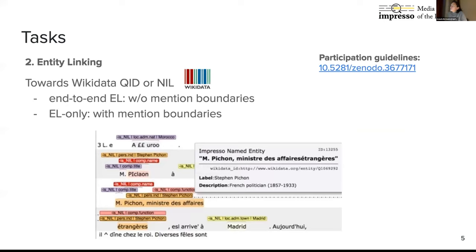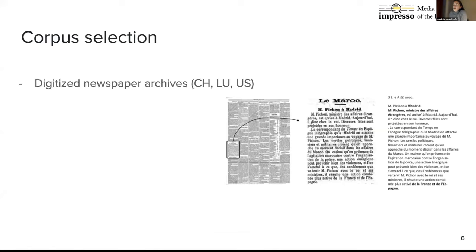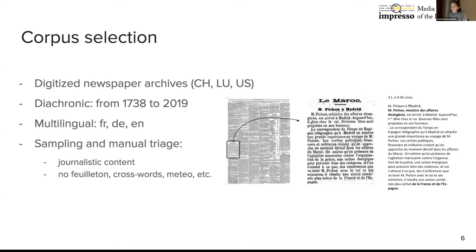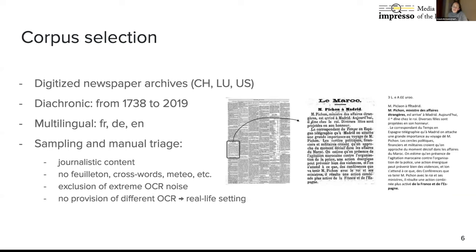As I said before, for historical documents there is no real benchmark existing, so we had to compose our corpora. For this, we selected historical newspapers from digitized archives in Luxembourg, Switzerland, and the US. We considered a quite large time span with more than 200 years, for documents in French, German, and English. We did a random sampling to compose our corpora, but we additionally did a triage to keep only journalistic content — filtering out photos, crossword tables, and articles which were extremely noisy. We chose not to provide different versions of OCR quality, in order to put systems in front of real-life settings where they face varying OCR quality across collections, newspapers, and time periods.